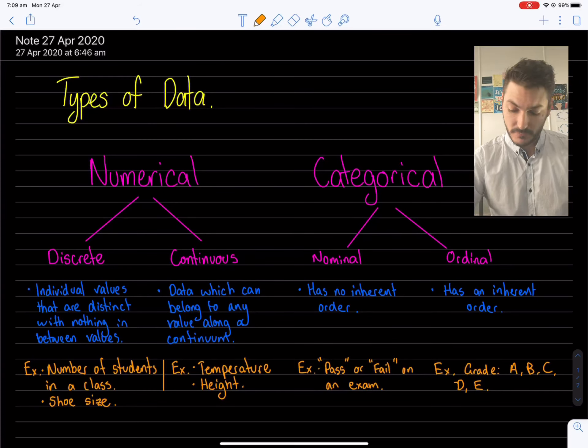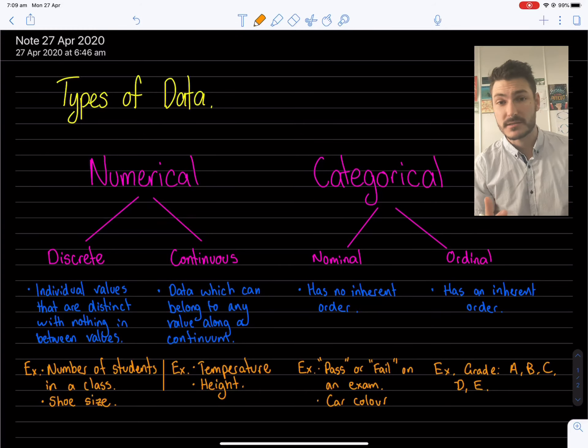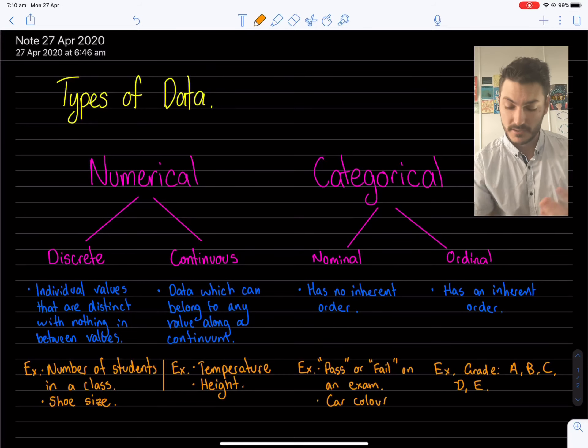Another example of nominal data might just be car color, as I alluded to earlier. Car color has no value. Red is not necessarily better than blue. Even if people have been asked what is their favorite, it's just simply discrete boxes of data. And the different categories. If there's no order, it makes it nominal. And yeah, that's probably the best example.